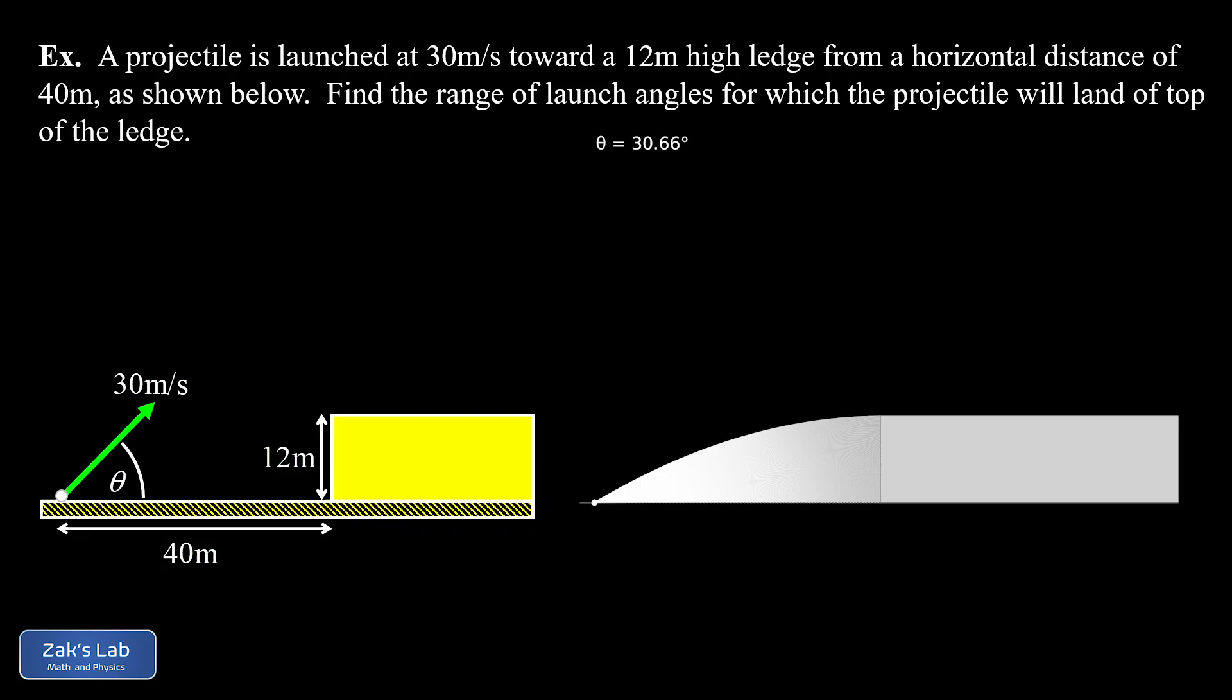This is the cut line where angles bigger than that are going to put the projectile onto the ledge. Prior to that, our projectile shots were just running into the ground or running into the face of the ledge. And now we're on top.